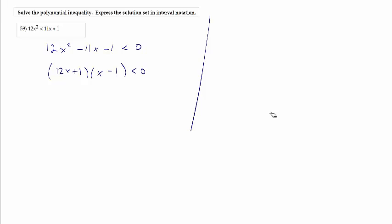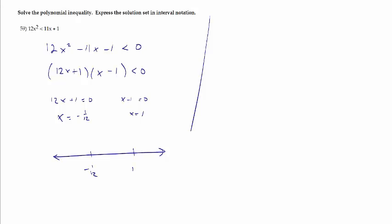We're going to break this up into regions of the real number line and pick a test point from each region. Our partition numbers come from setting each factor equal to zero: 12x plus 1 equals zero gives x equals negative one twelfth, and x minus 1 equals zero gives x equals 1. So here's negative one twelfth and here's 1. The sign of 12x plus 1 can only change at negative one twelfth, and the sign of x minus 1 can only change at x equals 1. So it'll always have one sign when x is less than 1, and a different sign when x is greater than 1.